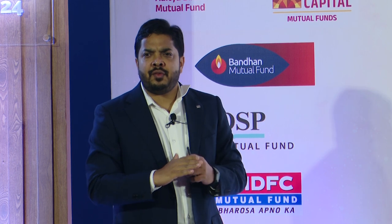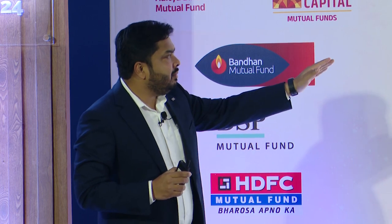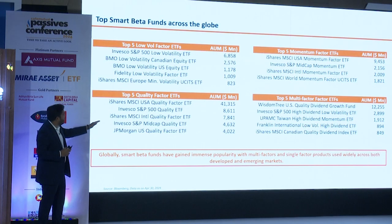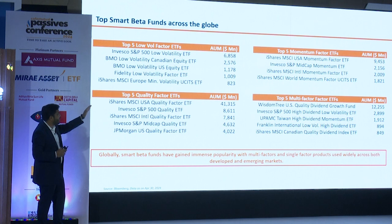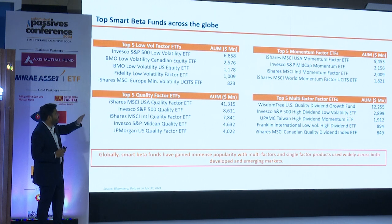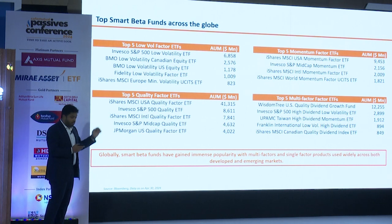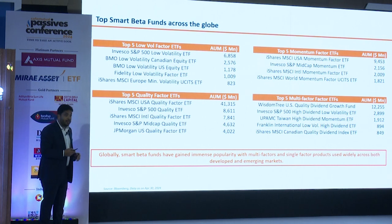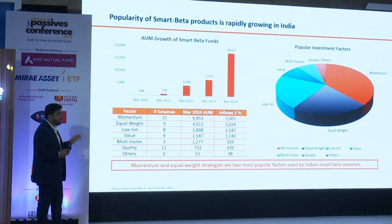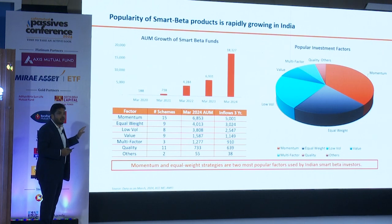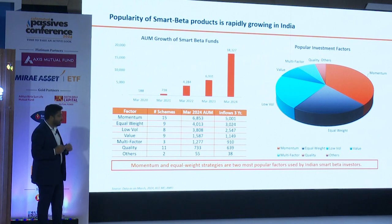So you will always have investors with very different requirements. And you can see globally: quality ETF is at almost $41 billion, low vol at $7 billion, momentum products at almost $10 billion. And the same is happening in India. Surprisingly — and this is one slide I like a lot — on momentum, there are 15 products in passive with an AUM of almost ₹6,800 crores.